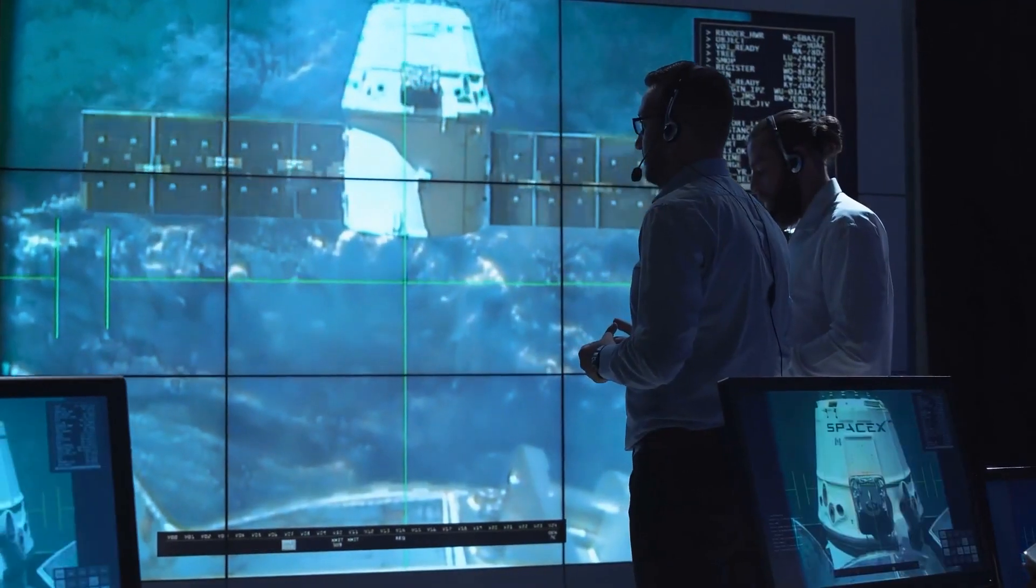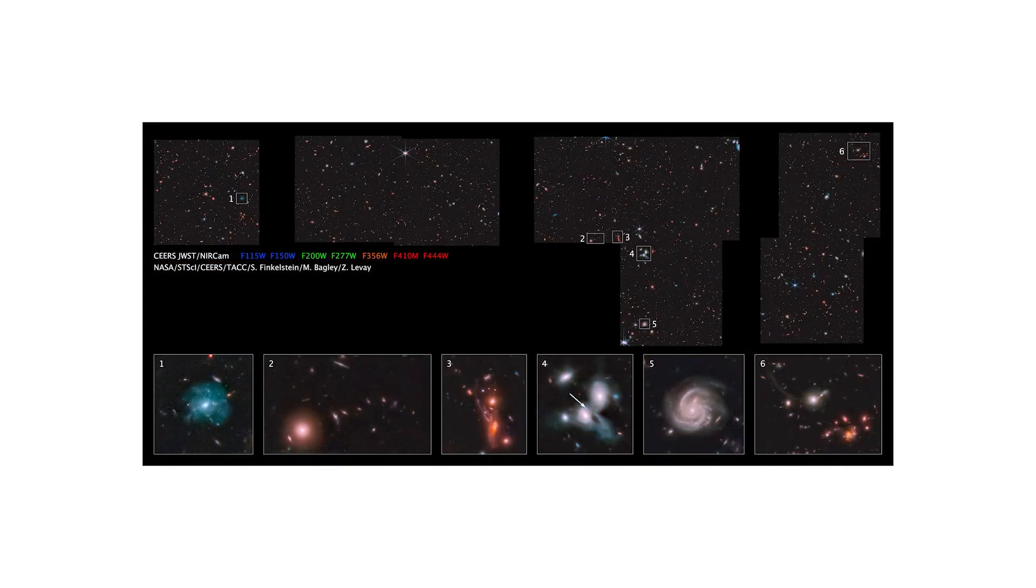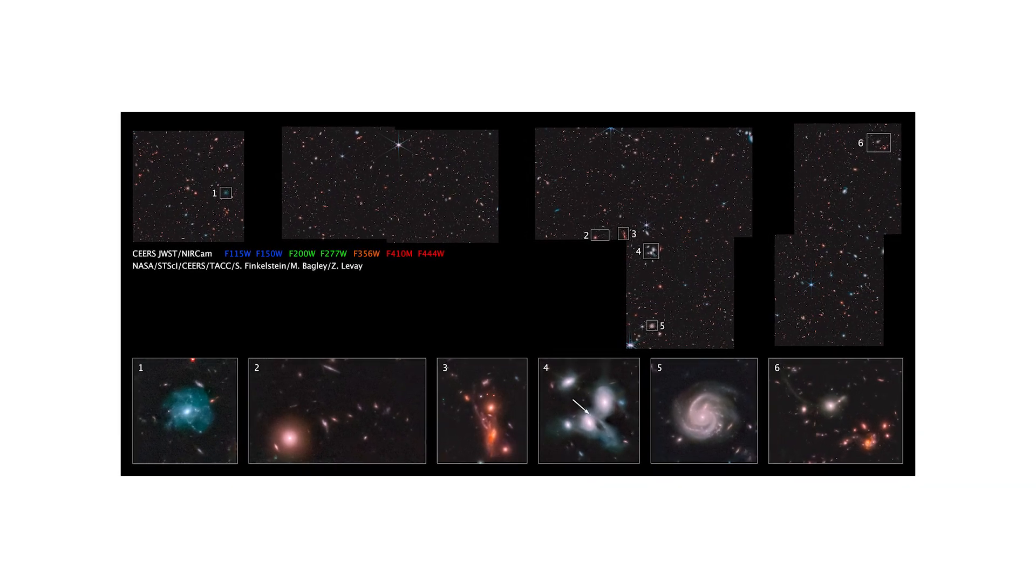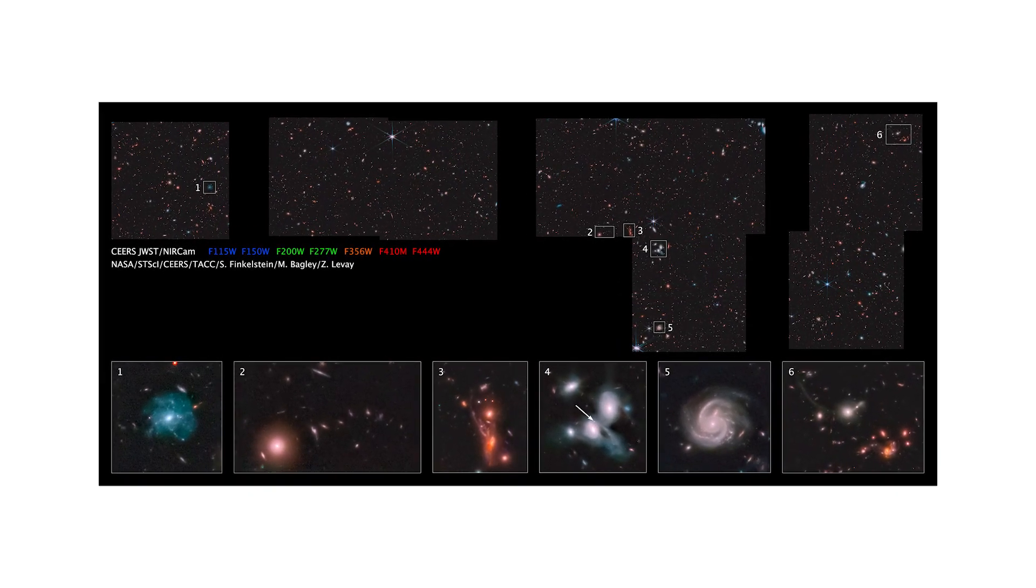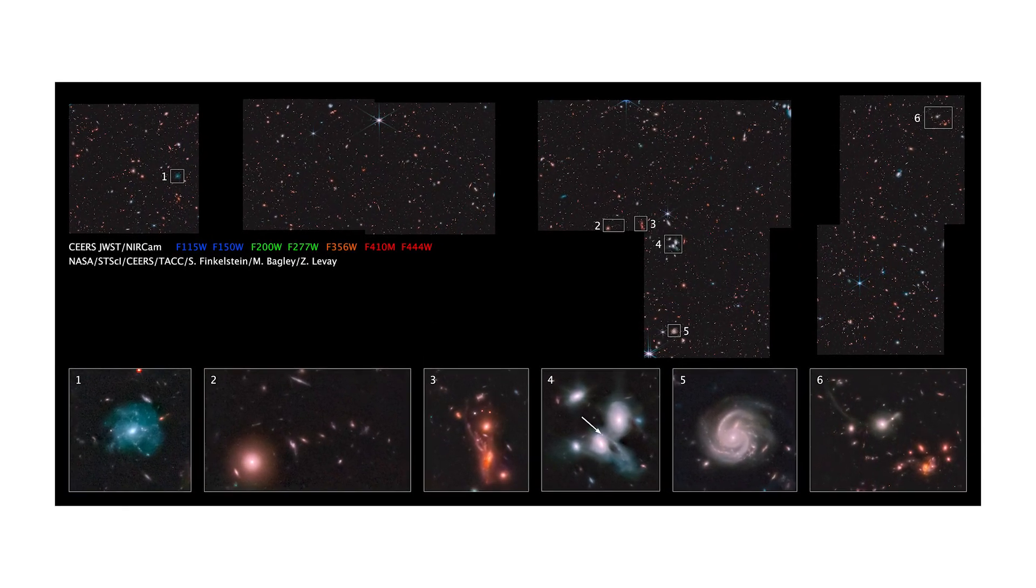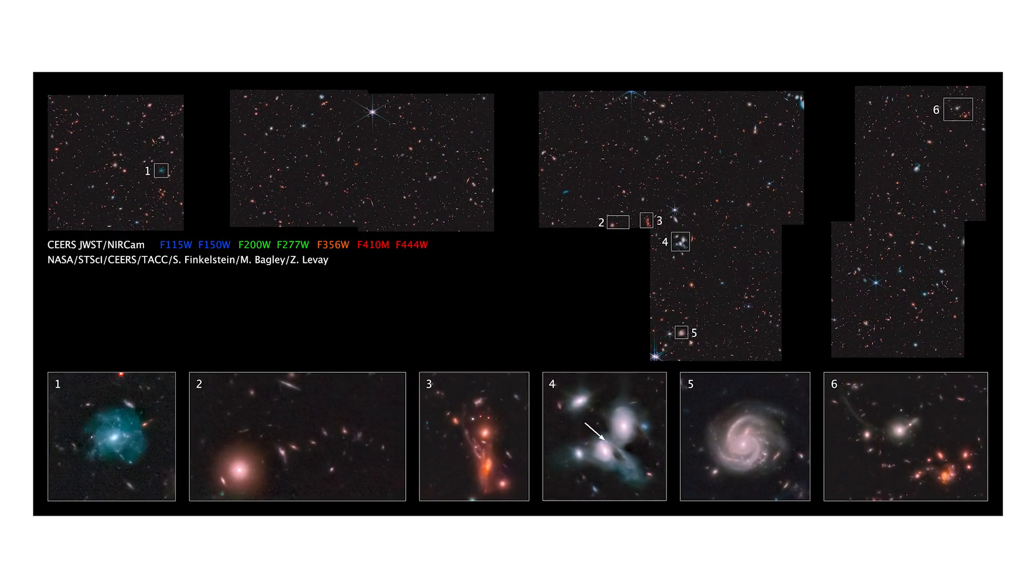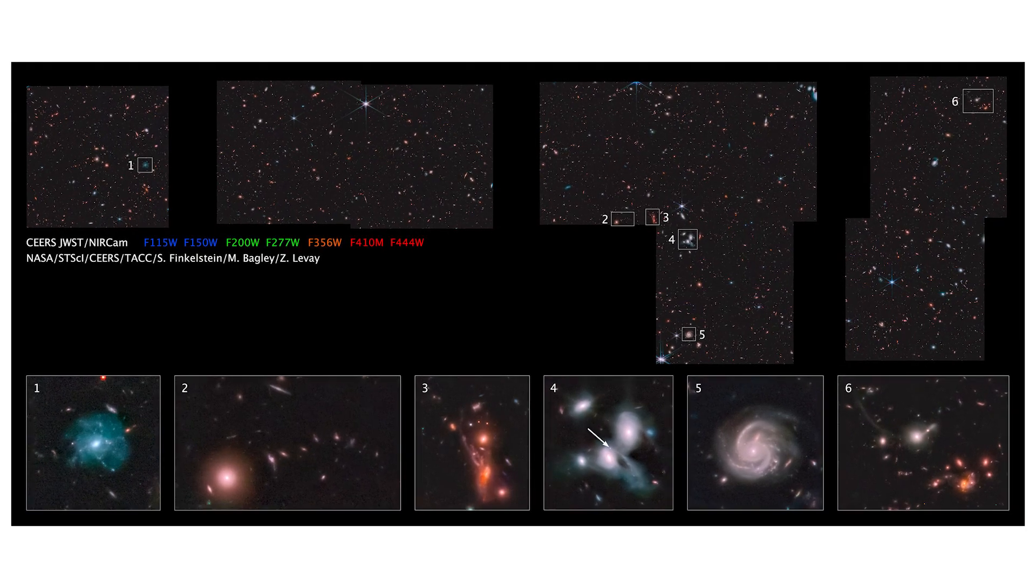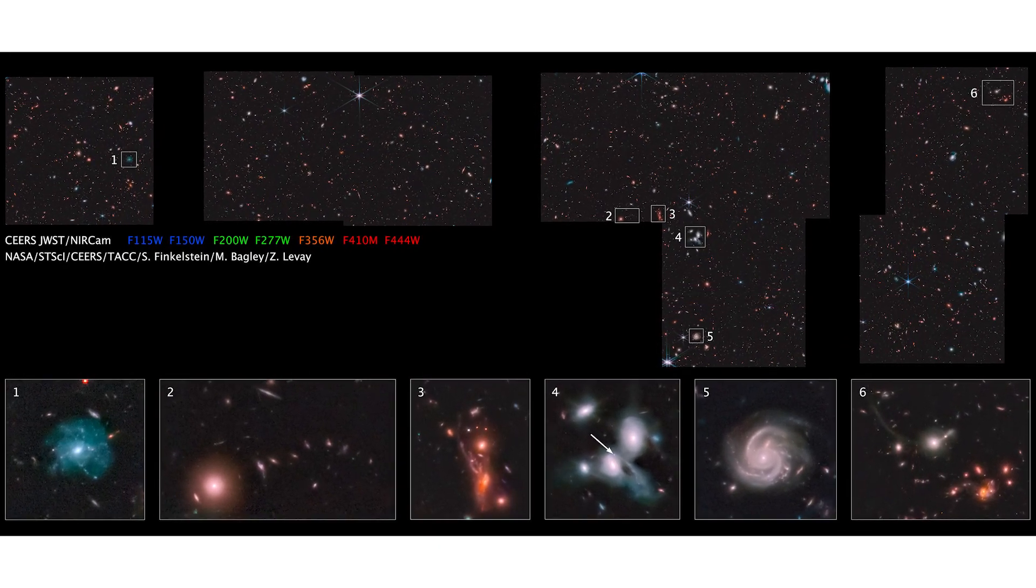In further observations not shown here, blue stands for 1.15 microns, green for 2.0 microns, and red for 4.44 microns of illumination.